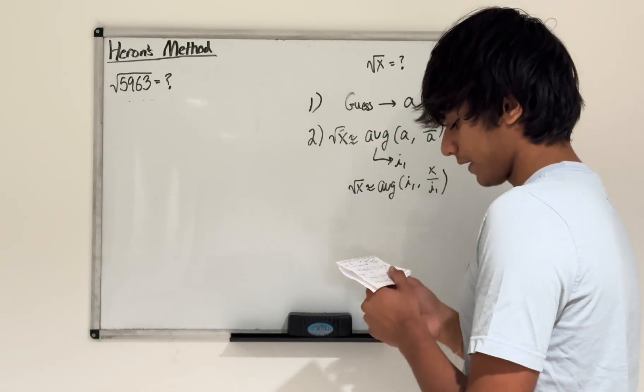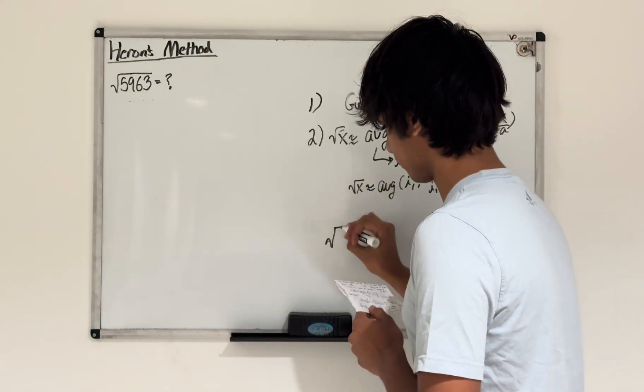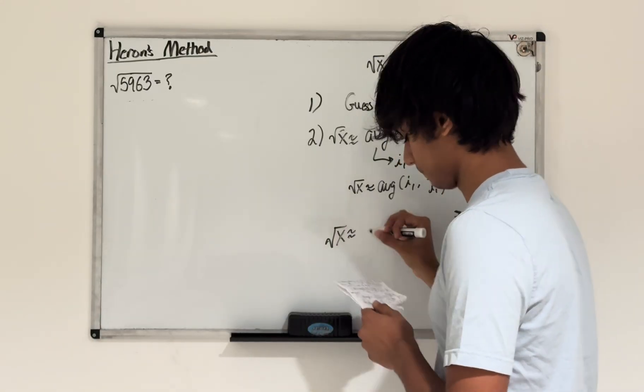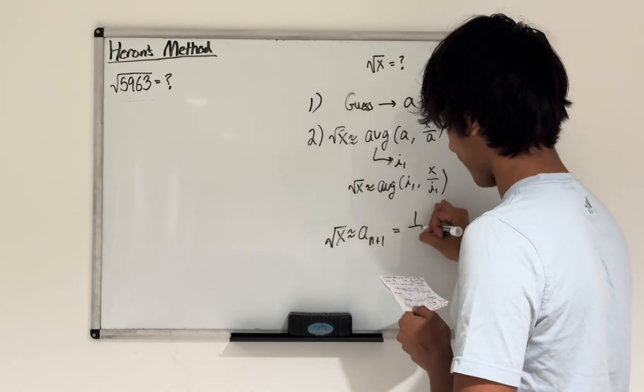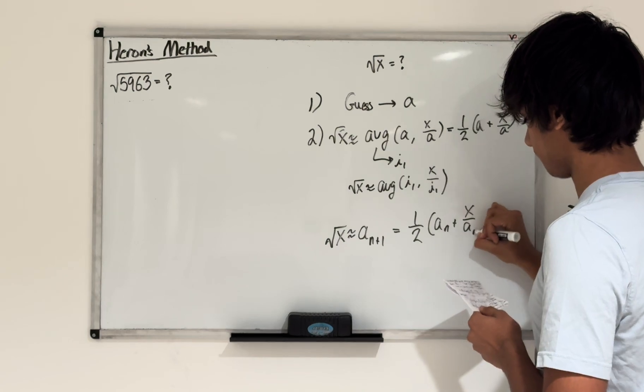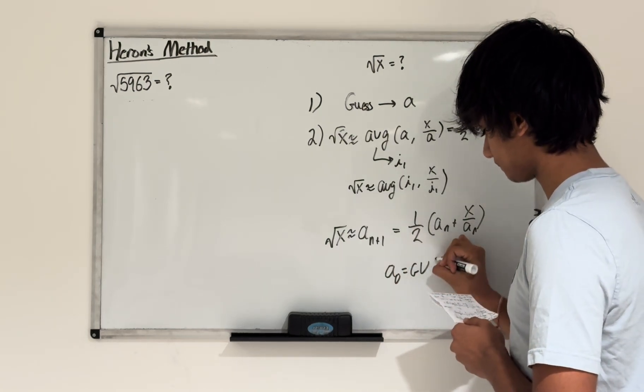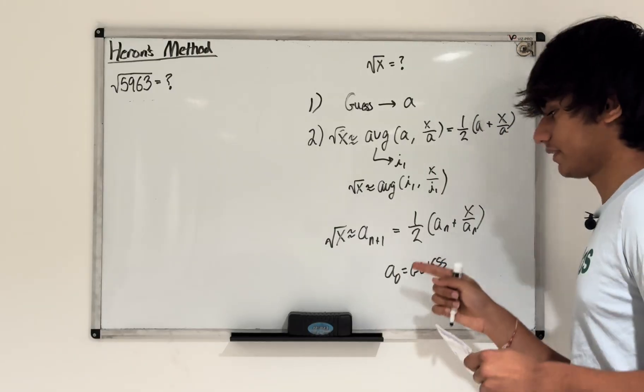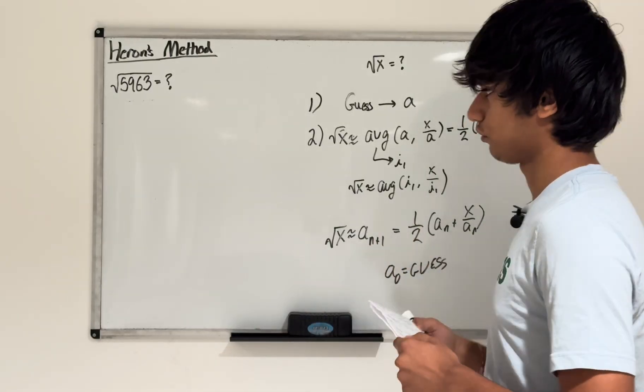To write this formula, if you want to write it in terms of a recursive formula, we can write this as square root of x is approximately equal to a sub n plus 1, which equals 1 half times a_n plus x divided by a sub n, where a sub 0 is equal to our guess. By this formula, as you can see, the more and more we do it, the closer we will be to our value square root of x.